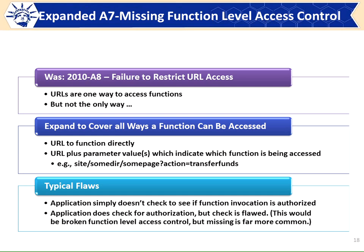We also changed another item. We used to have 'failure to restrict URL access,' which is basically function-level access control — I've got a URL that specifies the function I'm invoking, and I missed the access control check. But not everyone uses the URL to specify the function; sometimes parameters specify the function or a combination of parameters. So we broadened the terms to be more inclusive. Whether it says get account balance in the URL or function equals get account balance as a parameter, it's the same problem. That's all we did — broadened it a little bit, not a fundamental change, but more inclusive and I think that's appropriate.